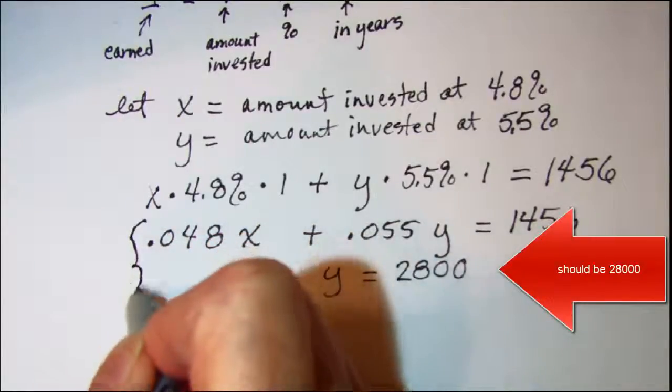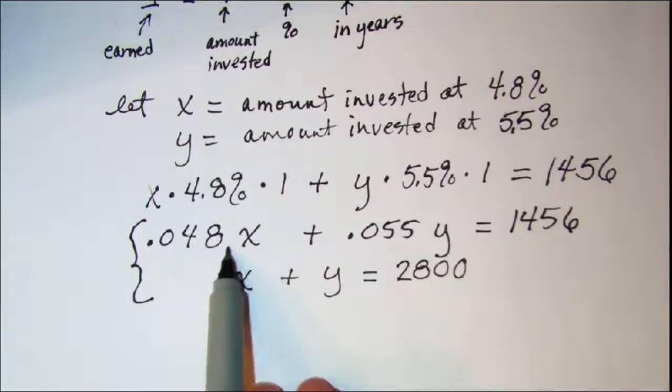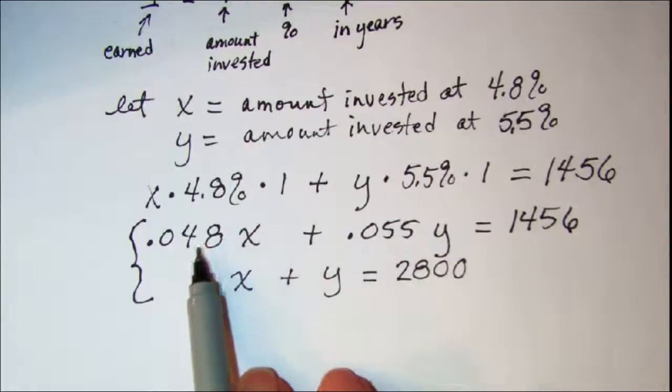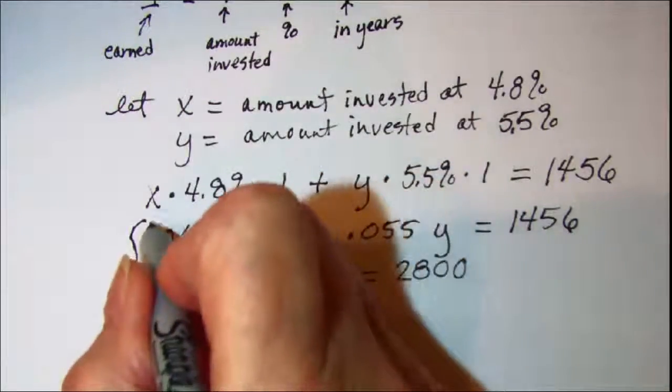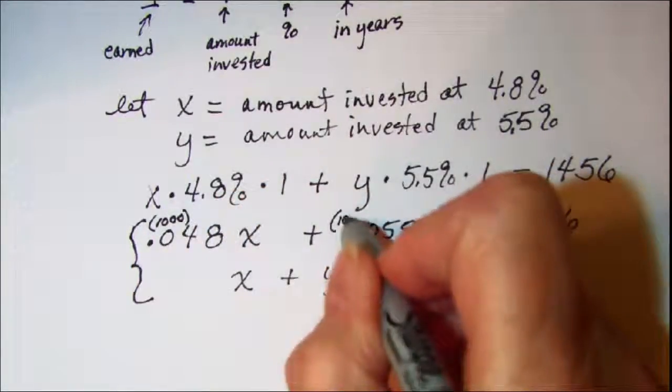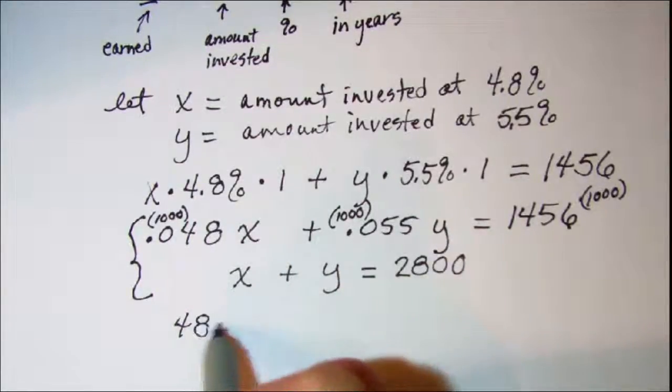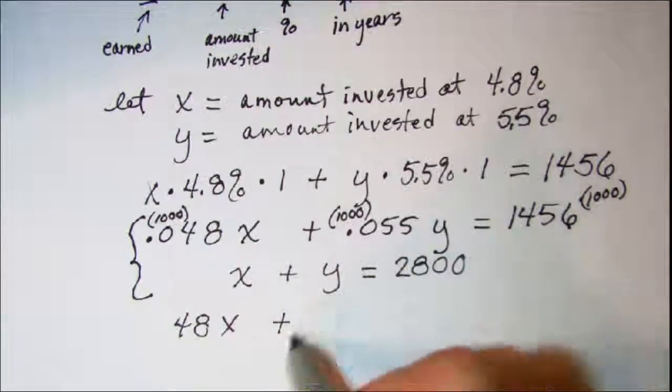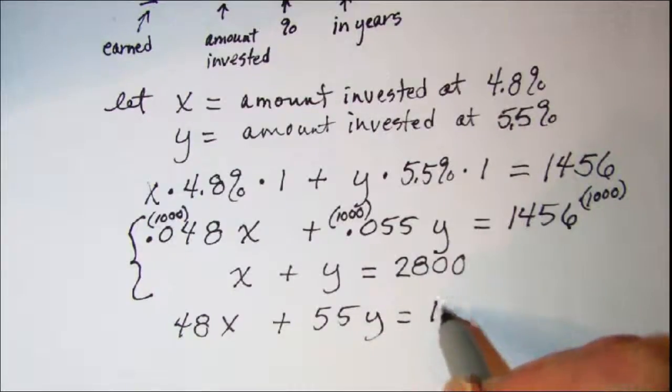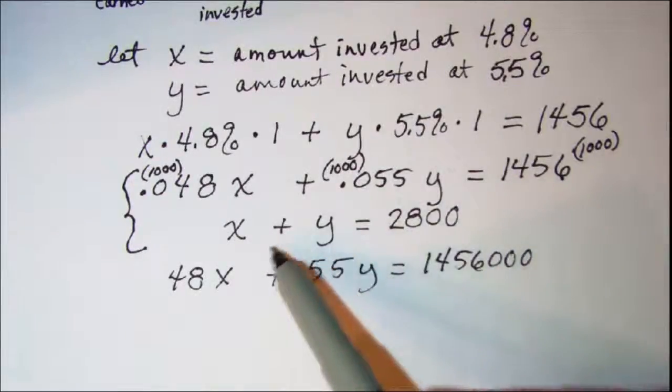So this is our system of equations that we're going to need to solve. I think I'm going to multiply this equation through by a thousand to get rid of our decimals. So I'll multiply each term by a thousand. And this equation then becomes 48x plus 55y equals 1,456,000. Then I think I'll use elimination.